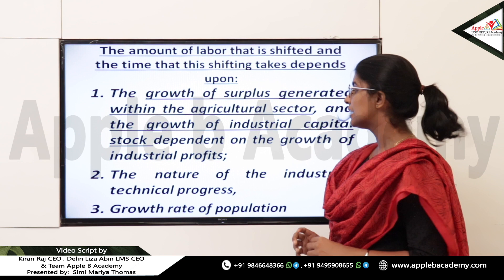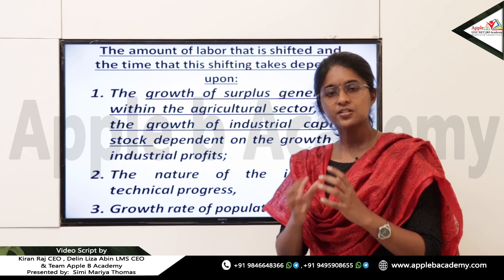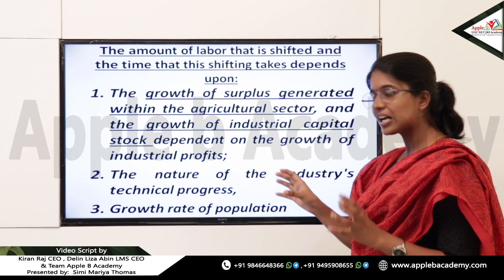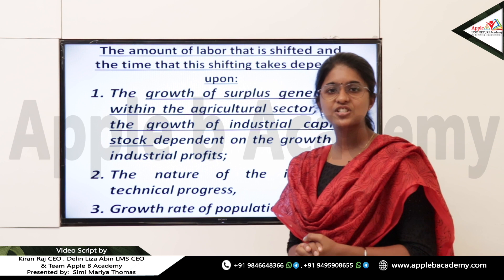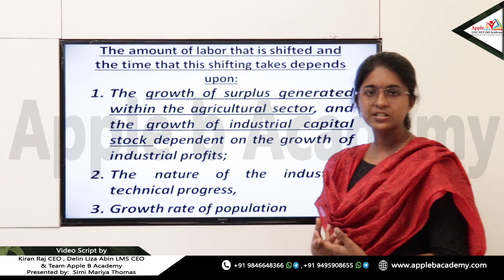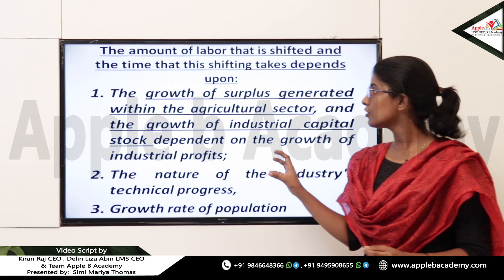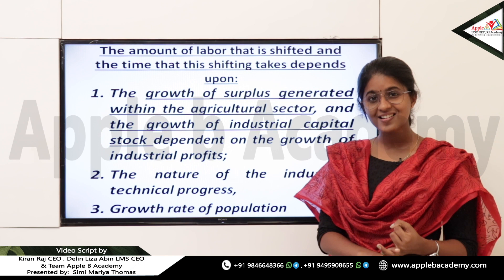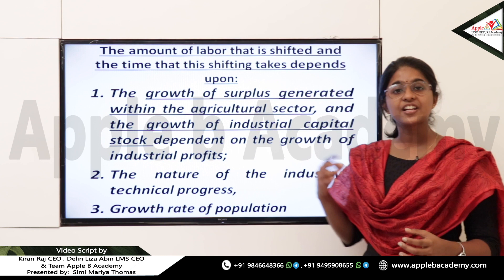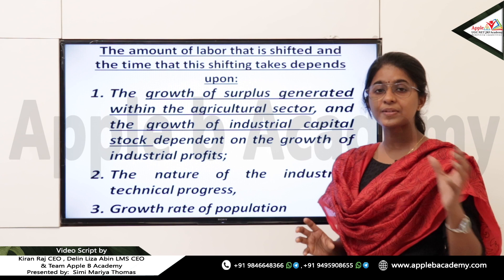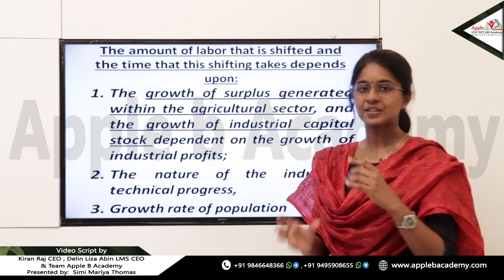The surplus generated in the agricultural sector and the profit generated in the industrial sector are factors determining what amount of labour to be shifted and when. The next determinant is the nature of the industry's technical progress, which changes from time to time. Additionally, the growth rate of population plays a key role. So the four aspects are: growth of agricultural surplus, growth of industrial capital stock, nature of technical progress, and growth rate of population.